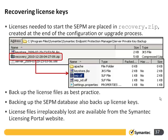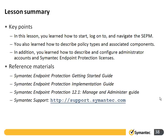Recovering license keys: the keys needed to start the SEPM are placed in a recovery.zip file created at the end of the configuration or upgrade process. It's a good idea to ensure you have copies of this file — backing up the license files is best practice. At the end of this lesson we've learned how to log on and navigate around the SEPM, and how to describe the policy types and associated components.